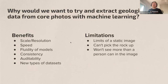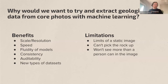Why on earth would we want to extract geological information from core photos using machine learning? The issues we have with the way cores are currently logged are basically that more than one person can interpret the core differently — so there's inconsistency — but the really big problem in a production setting is that we lack an audit trail. When someone decides to call a rock one thing or another, the reasoning is in their head, flows to a database, and is considered done.